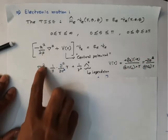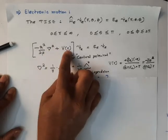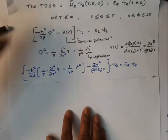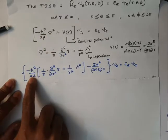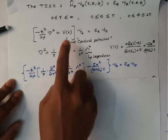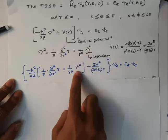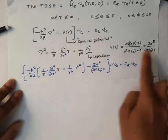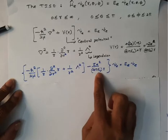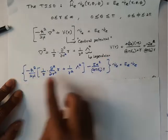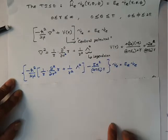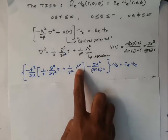Substituting the expressions for ∇² and the potential energy into the Hamiltonian gives: −(ℏ²/2μ)[(1/r)(∂²/∂r²)r + (1/r²)Λ²] − Ze²/(4πε₀r), applied to ψ_e, equals E·ψ_e. Since the potential energy depends only on the radial coordinate, we can separate the electronic wave function into a radial function and an angular function.